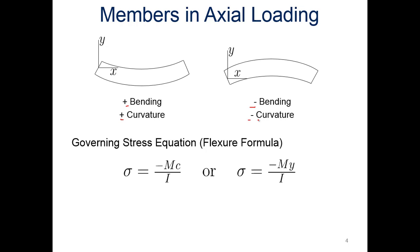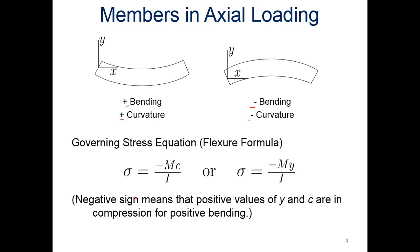As a result, our governing stress equations or flexure formula: the stress is equal to the negative of the moment times C divided by I, the moment of inertia, where C we can also look at as Y. The negative sign means the positive values of Y and C are in compression for positive bending, so it gets us in the right convention with negative bending, positive bending, and compression versus tension in those cases.